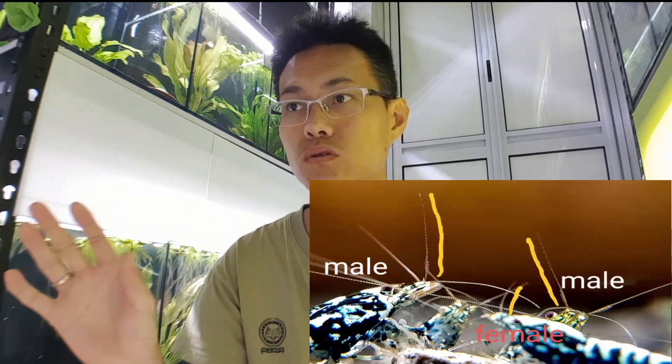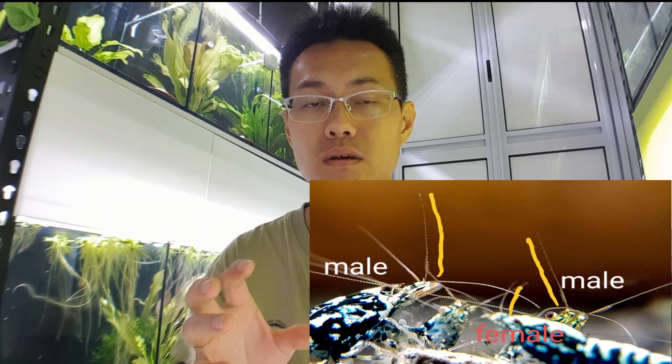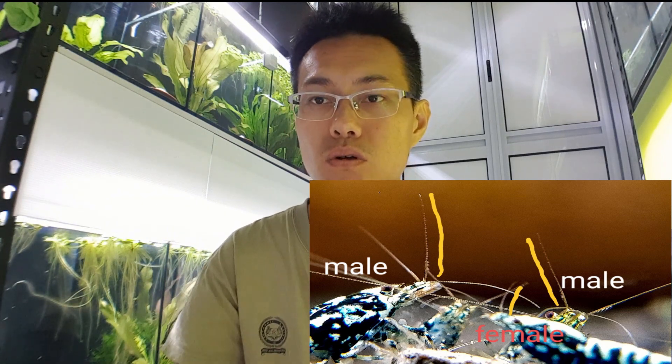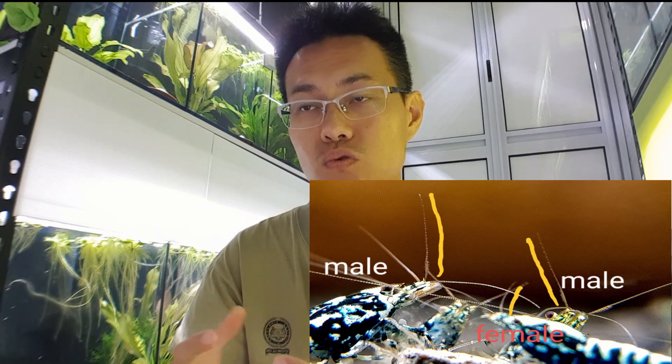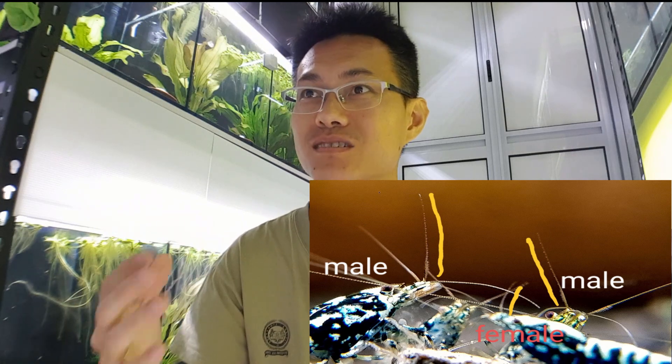So the top criteria I use for differentiating between male and female shrimp is the antenna — not so much the belly, not so much the size. The criticality of differentiating between male and female is really about selective breeding. If you are able to discern between male and female at a young age, you are able to separate them and control all the factors involved in the selective breeding process. It's not straightforward and not easy, but it is one of the more accurate ways.